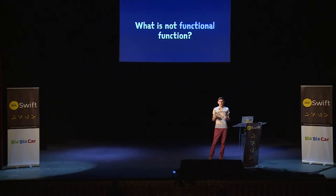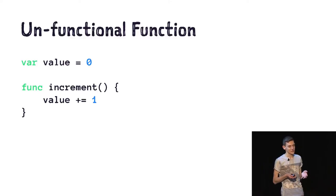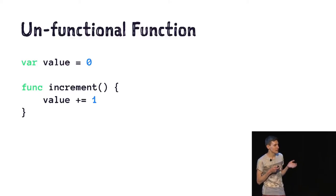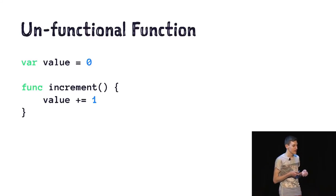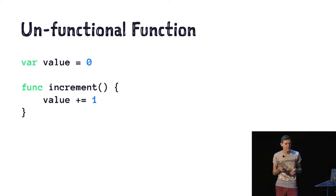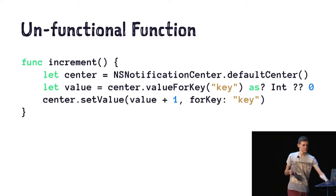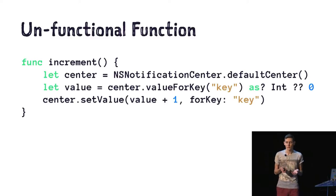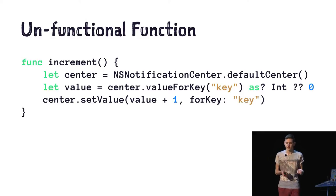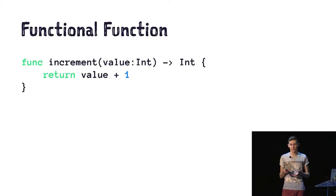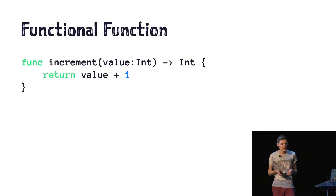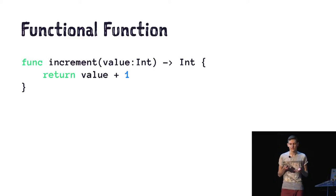It's where you don't rely on data outside the current function, and it doesn't change data that exists outside the current scope. So what is not a functional function? An unfunctional function looks something like this — we have a function which increments a value outside of itself and changes the scope, changing global state and mutating it. We also have another example using NSNotificationCenter instead of a global variable — it's a singleton and it has a side effect when you call this function, making it hard to test. In contrast, we have a functional function which has no side effects, doesn't use mutability, and is really pure.